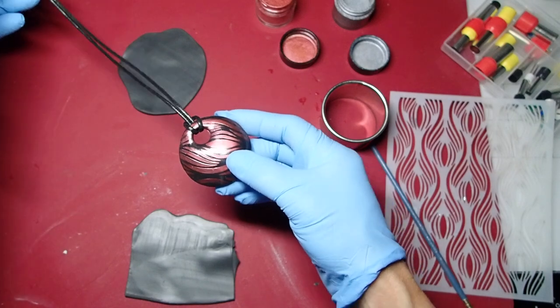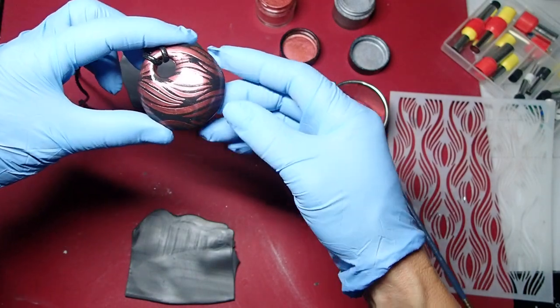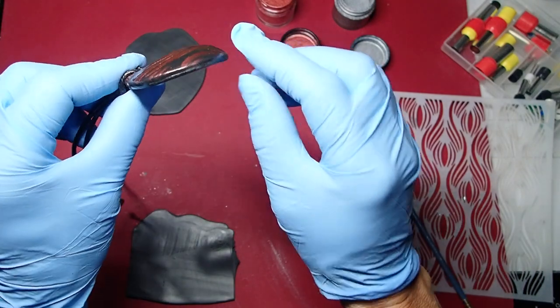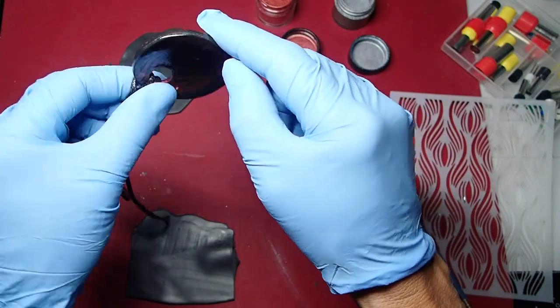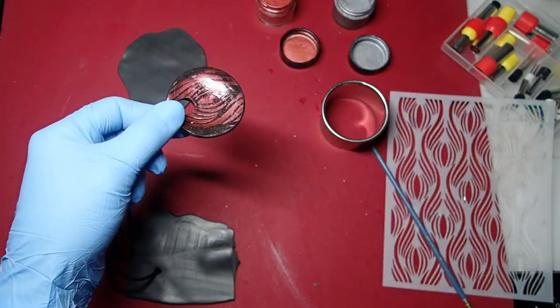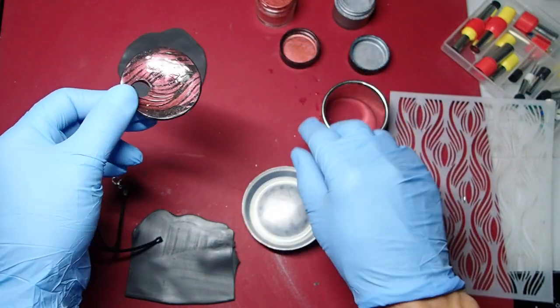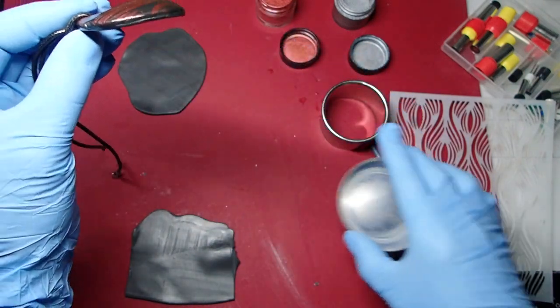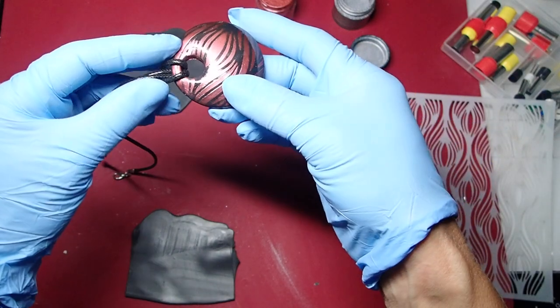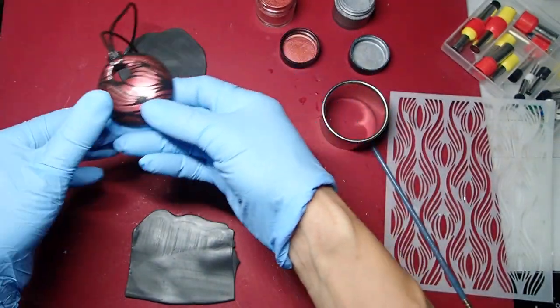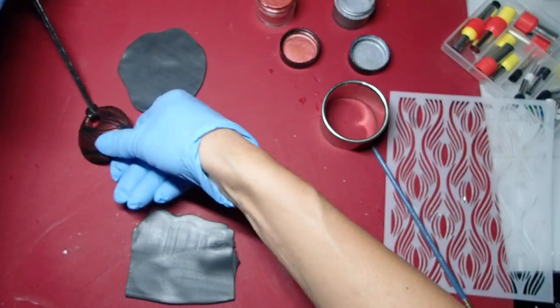Today I wanted to show you how to make this puffy pendant. You can see that it does have this dome shape to it. I did bake it on the bottom of a can, so even the back is dome shaped, but you can see that it's hollow inside.